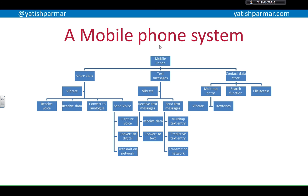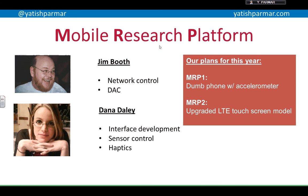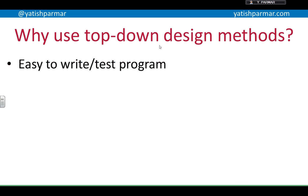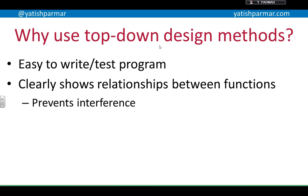Imagine I'm starting a mobile phone company with two people with different specialisms. I want to develop a basic phone this year and a fancy 4G touchscreen model next year. Why would I use a top-down approach? First, it's easy to write and test the program, because small functions are shorter, easier to write, and easier to test and debug. It's also easy to see the relationship between different functions, which prevents interference between different functionality.